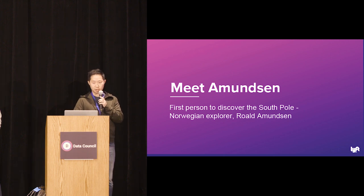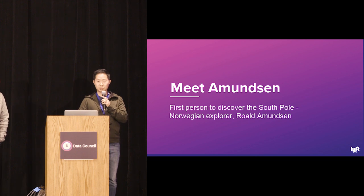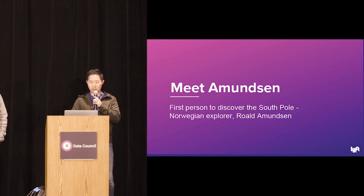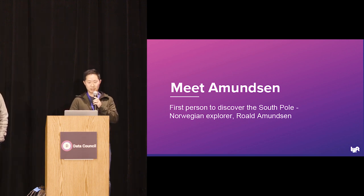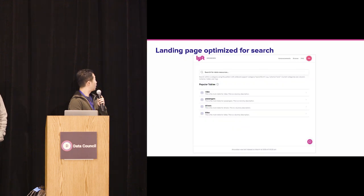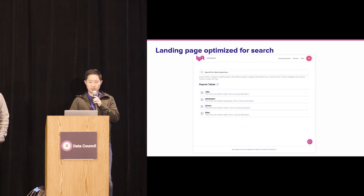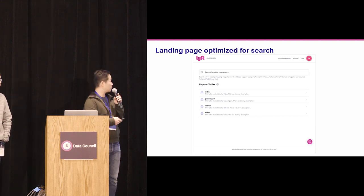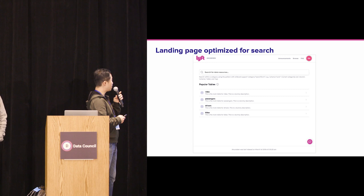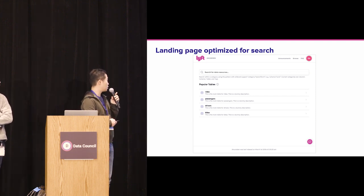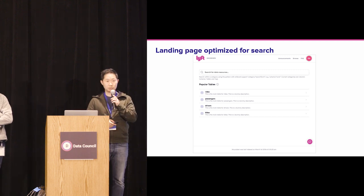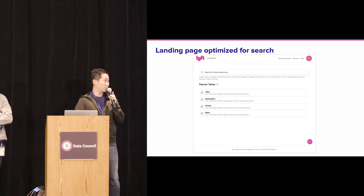We created a product called Amundsen — named after the first person to discover the South Pole, an origin explorer, which we thought was a good match for our discovery product. The first page of Amundsen is similar to Google: there's one big text box for users to type in keywords, and we also provide popular tables for new users to quickly navigate without typing a search.